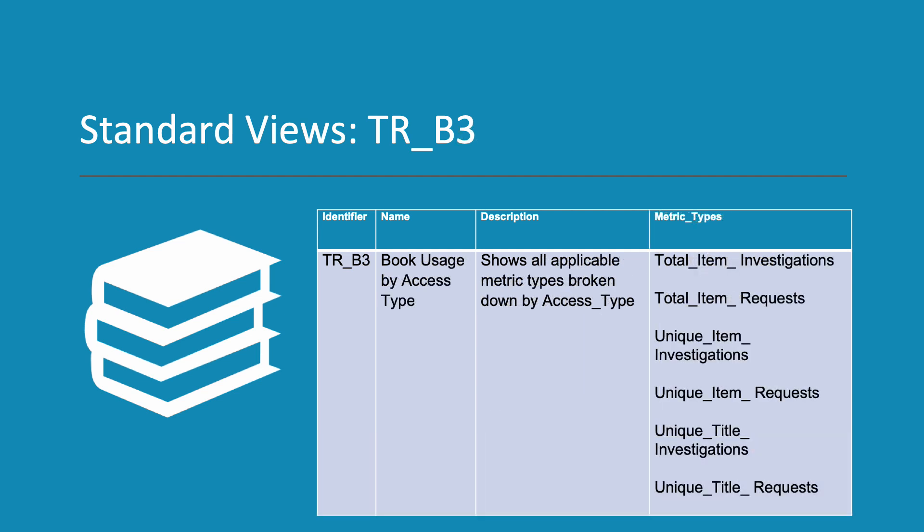TR B3 is the standard view that shows all applicable metric types broken down by access type. That means TR B3 uses six metrics – Total Item Investigations, Total Item Requests, Unique Item Investigations, Unique Item Requests, Unique Title Investigations, and Unique Title Requests. This report tells you about full-text views and downloads and the other actions or investigations performed by a user – these might include viewing a book or chapter abstract or preview.